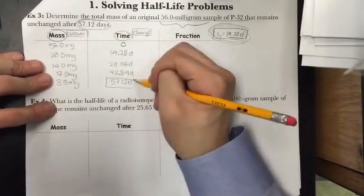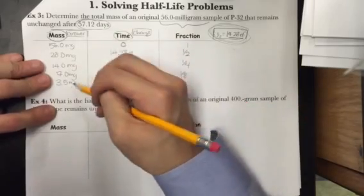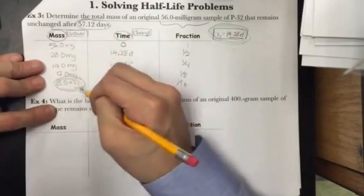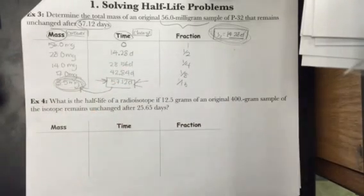So now that I've reached the change I've desired of 57.12 days, I now have to look in the mass column to find the answer. The mass that remains after 57.12 days is 3.5 milligrams. So that's your answer there.